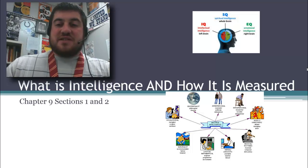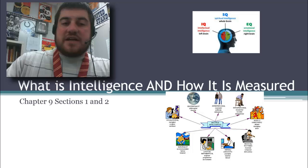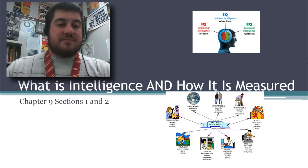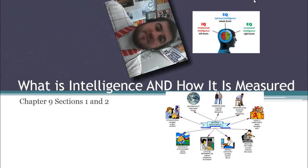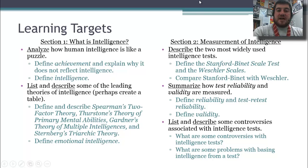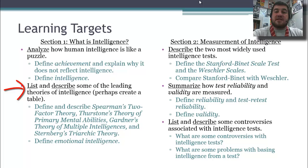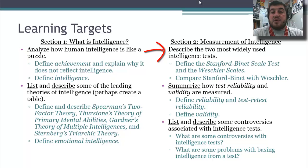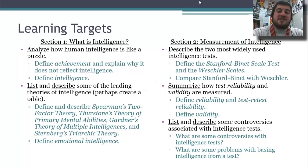Hi, and welcome back to Psych with Mr. Snyder. Today we get into a new chapter after a very quick last chapter 8 about thinking, and we'll discuss intelligence and how it is measured. Here are your learning targets today: we'll talk about how intelligence is like a puzzle and what it is, our definition of it, and list and describe some of the leading theories of intelligence. In section 2 we'll talk about the two most widely used intelligence tests, reliability and validity, and controversies associated with intelligence testing.